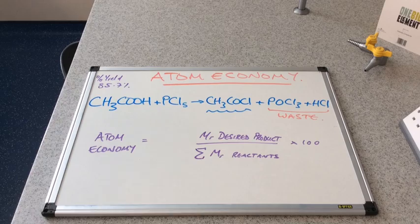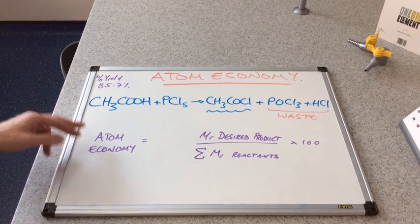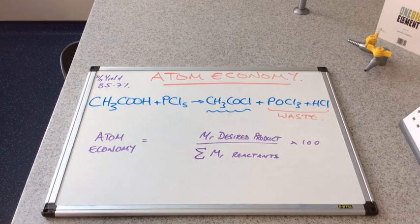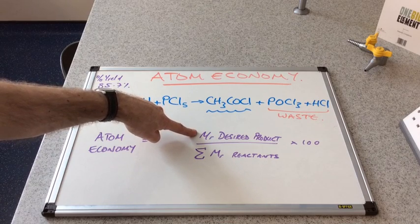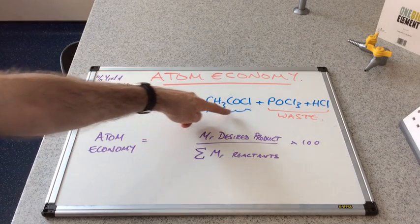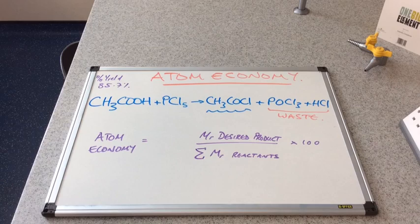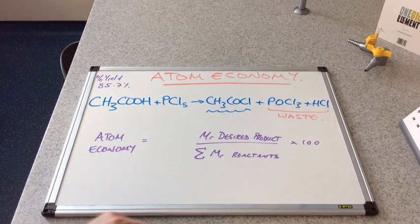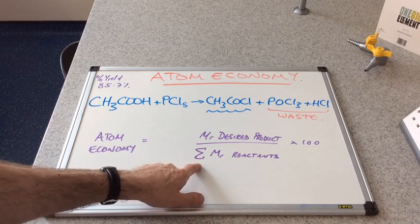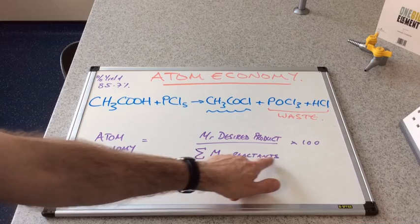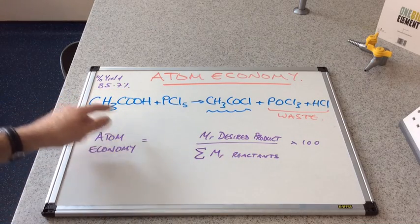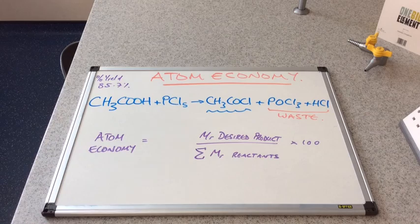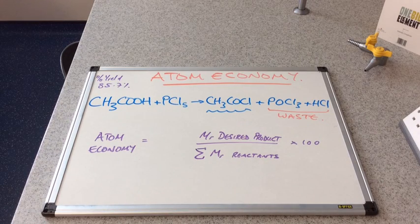And so there's the formula to calculate atom economy. Atom economy is calculated by working out the MR of the desired product, so that's this CH3COCl, and we're going to divide that by the sum of the MRs of all the reactants. So basically we're going to add all the MRs together here and put them down there, and then multiply by 100 and express it as a percentage.